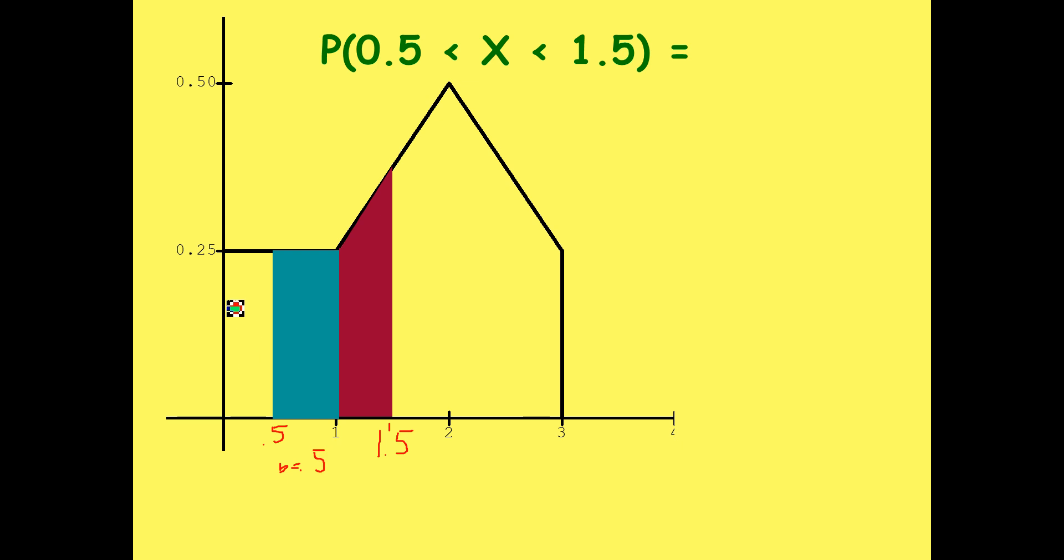Why is that? Because it ranges from 0 to 0.25 on the vertical, and it ranges from 0.5 to 1, which is a length or a difference of 0.5. And for a rectangle, we simply multiply base times height, and we get the area, 0.125.